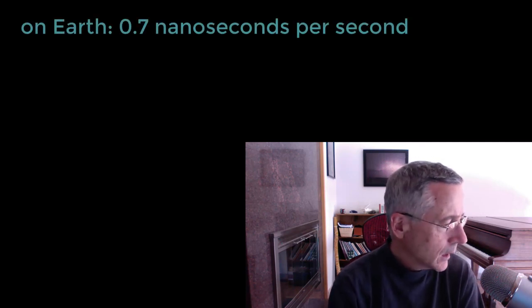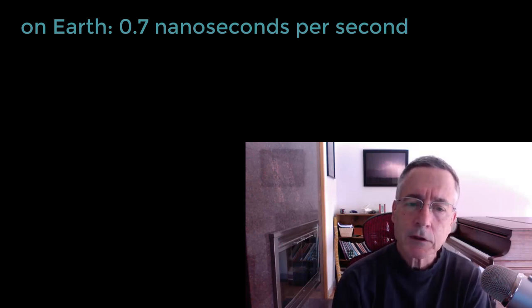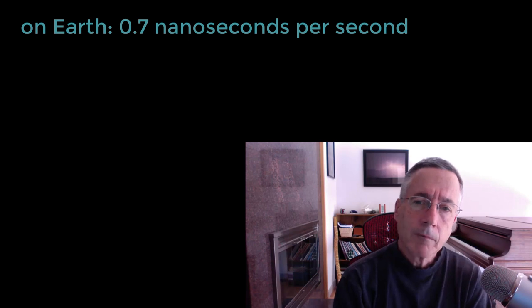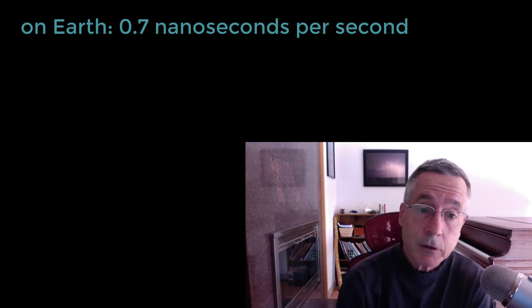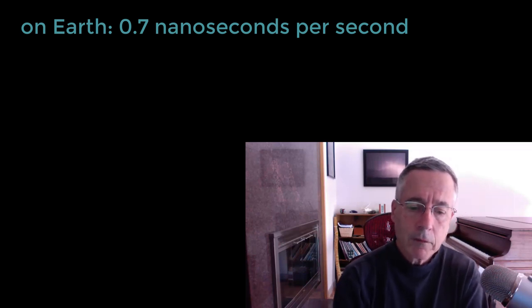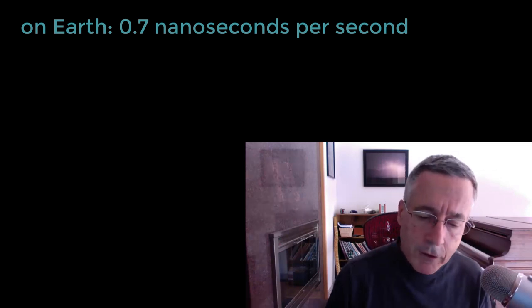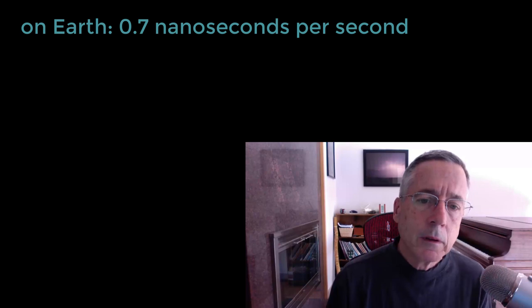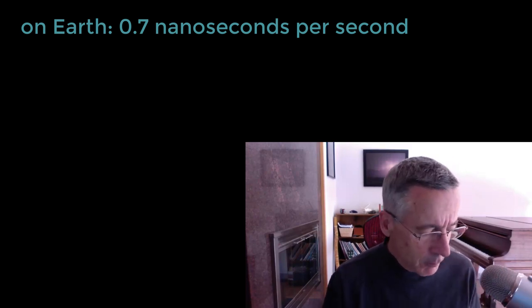It's a pretty small effect. On the Earth, it's something a little less than a nanosecond per second that time is slowed down by. Atomic clocks and computers deal in nanoseconds — or picoseconds, which are even shorter. You can have an atomic clock flying around in an airplane and one on the ground, and you can actually see the difference in the time they keep when you compare them, but it's not anything terribly noticeable.